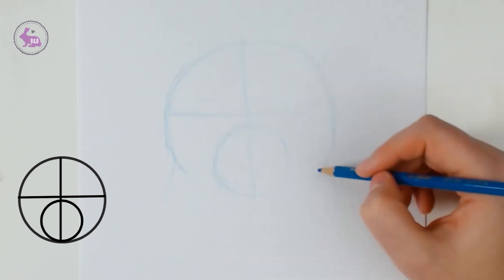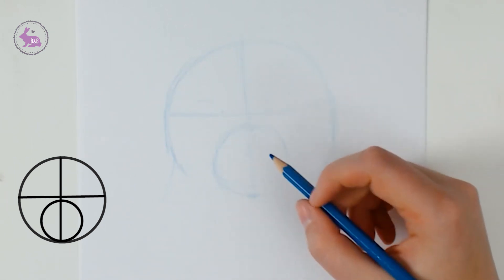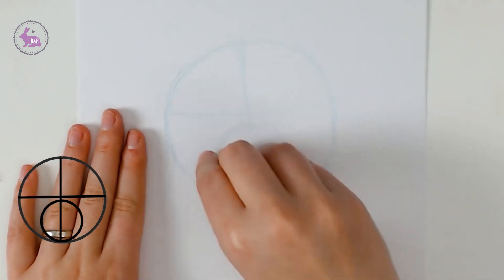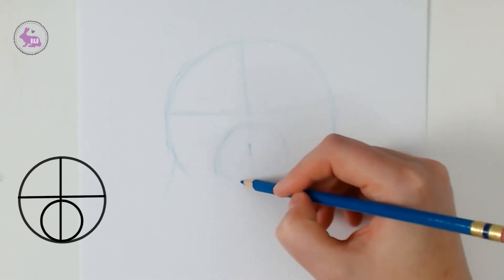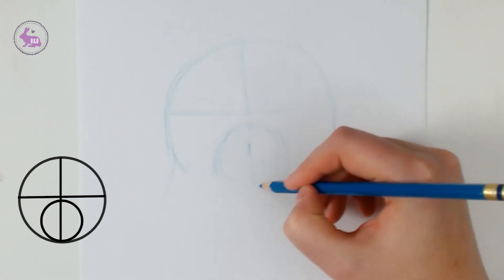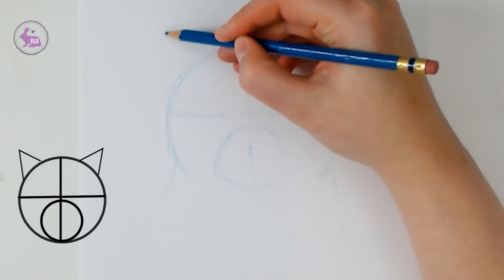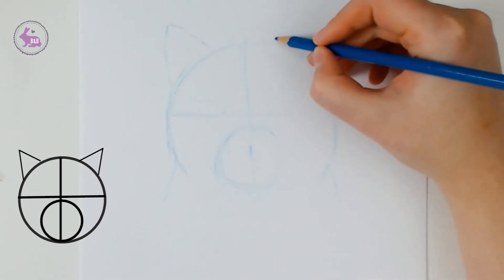For this drawing, I used specifically the Prismacolor Colerase in light blue color to start off the sketch because I knew I was going to be coloring in the fur with a lot of pencil crayons and wanted a nice light sketch. For future video tutorials, I'll be using graphite in terms of the actual quality so you can see it better.